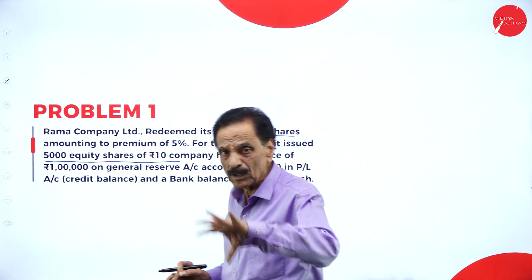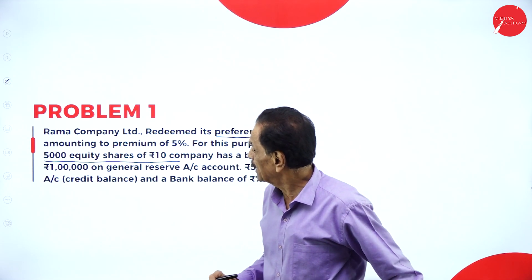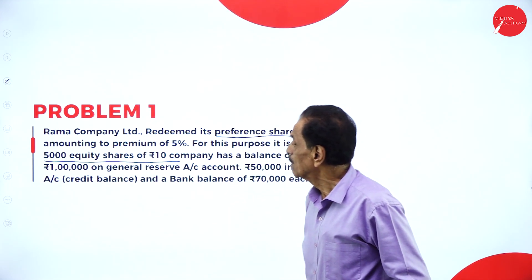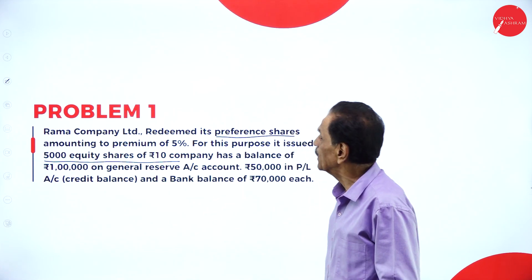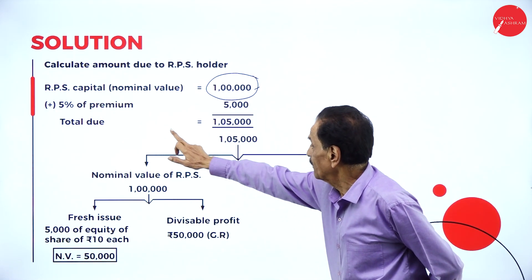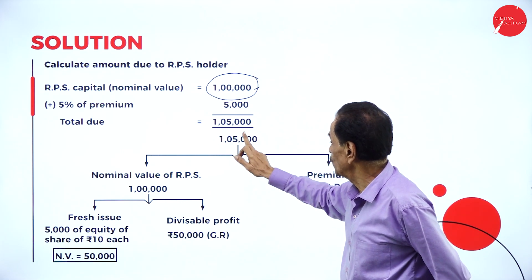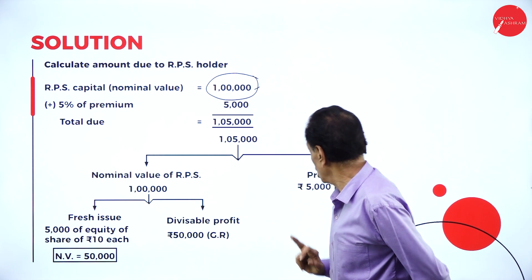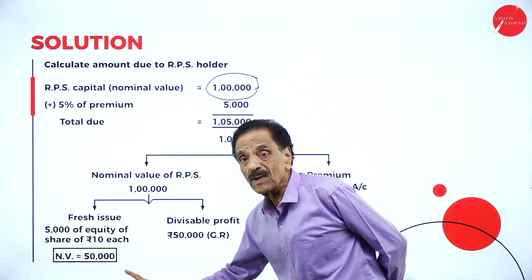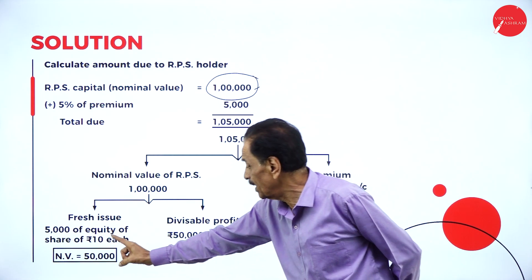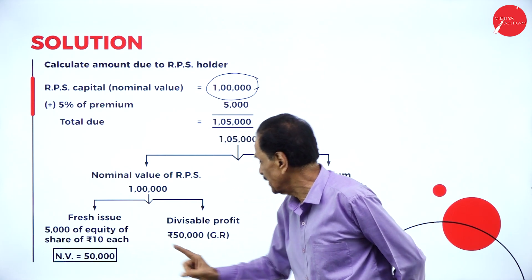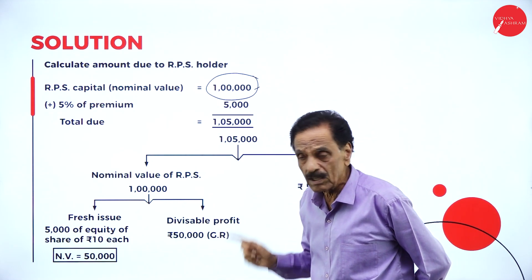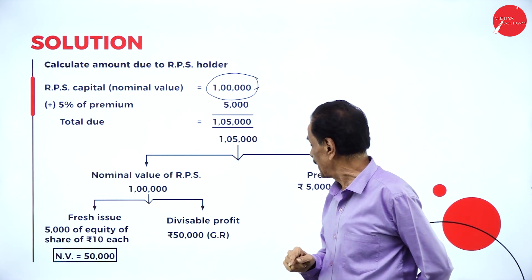₹50,000 in profit and loss account balance and a bank balance. How are they redeemed? What are the entries you have to pass? They have issued 5000 equity shares of ₹10 each. The nominal value is 1 lakh; 5% premium is 5,000. Totally you have to pay 1 lakh 5,000. We issued fresh shares. Another divisible profit available in general reserve — we take 50,000 from the general reserve to create the CRR.